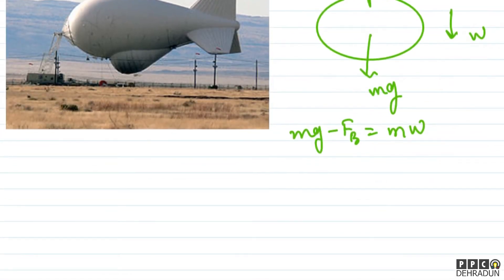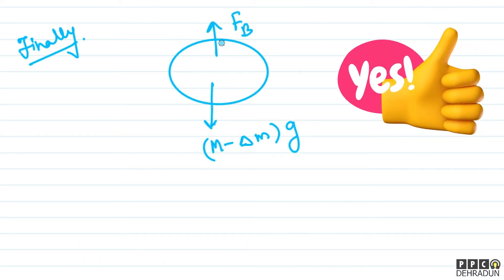Now see, let's come to the second case. So what is finally going to happen? Finally, we need to reduce the mass. So if we reduce the mass, then the force of gravity acting on it will be M minus delta M multiplied by G. But the shape remains the same, so the force of buoyancy will remain the same.